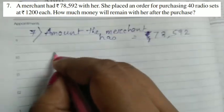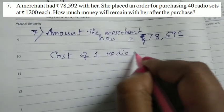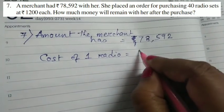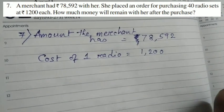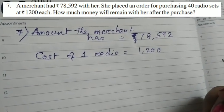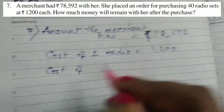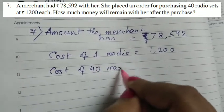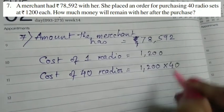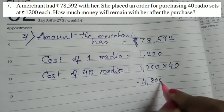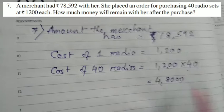Next I have the cost of 1 radio. Cost of 1 radio is 1,200. He bought 40 radios at 1,200 each. Cost of 1 radio is 1,200. Therefore, what is the cost of 40 radios? 40 radios will cost 1,200 into 40. That is equal to 12, 48, and then after that there is 2 zeros plus 1 zero, so 48,000.